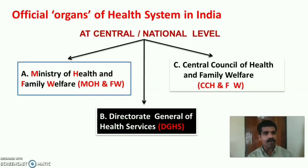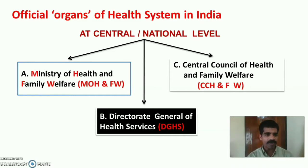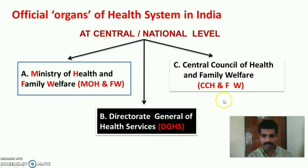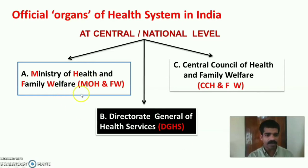There are three official organs of the health system at central or national level: Ministry of Health and Family Welfare, Directorate General of Health Services, and Central Council of Health and Family Welfare.